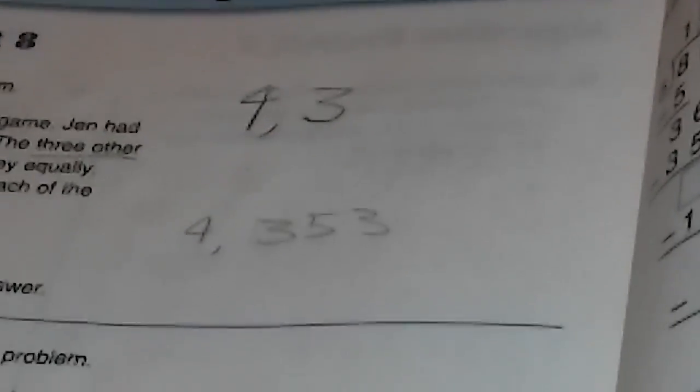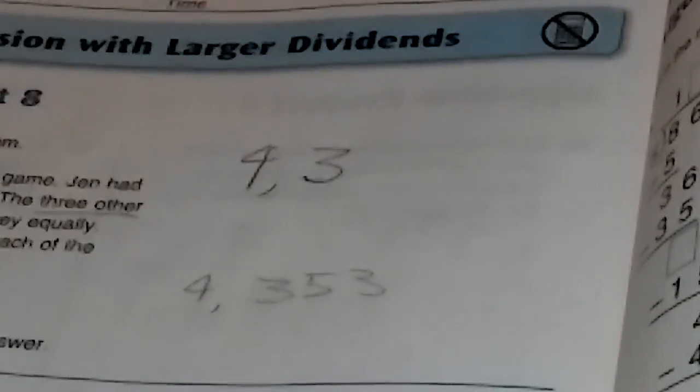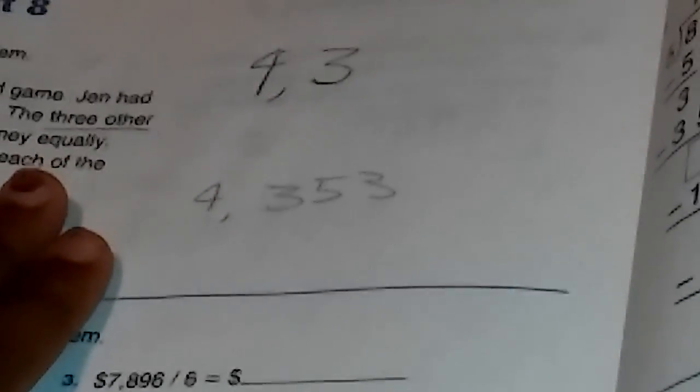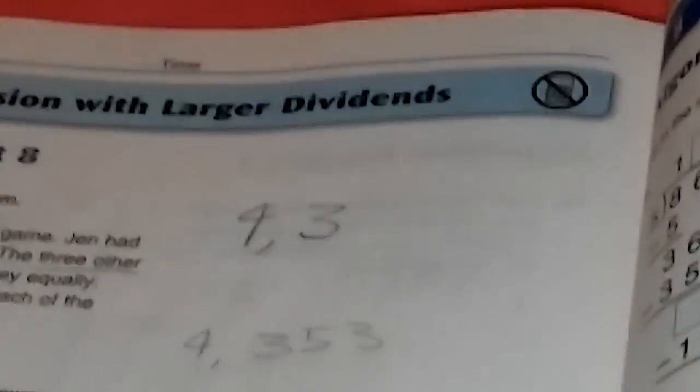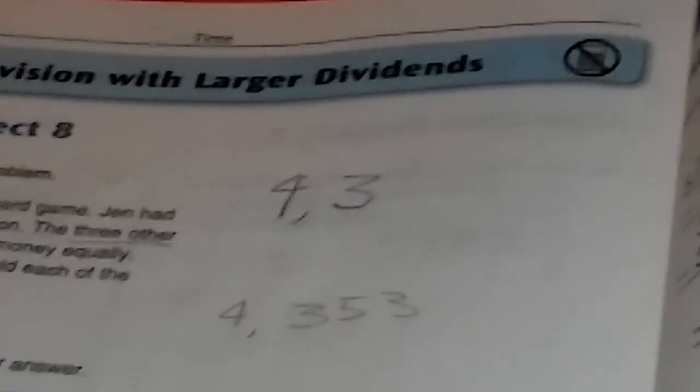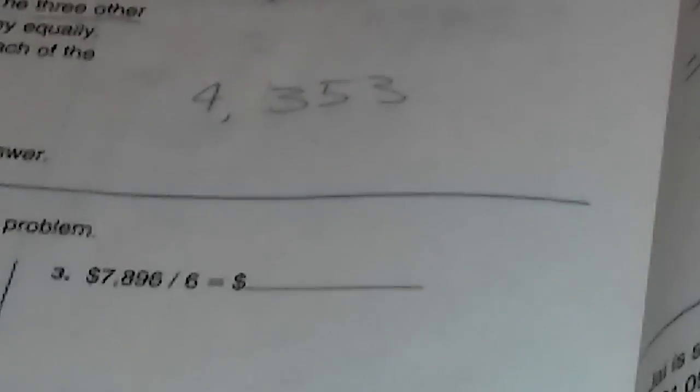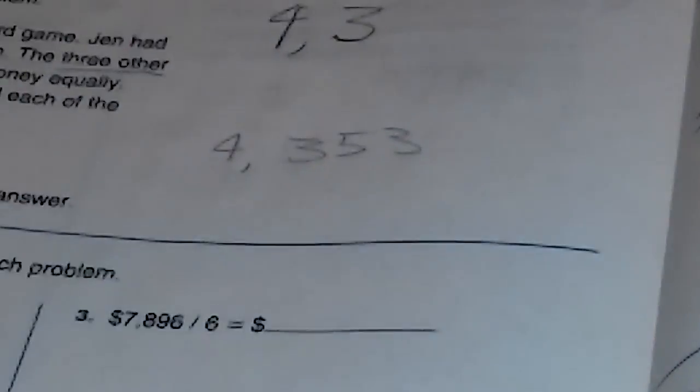And then it's asking, how much should each of the three players get? So this question is telling me that we should divide, that they want to know what each three players get. So we're going to have to divide, obviously. So we have four people, which includes three players with Jen.